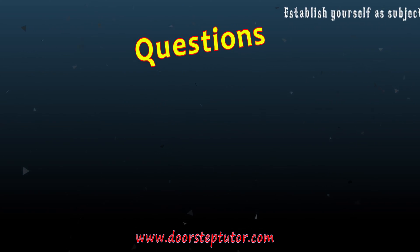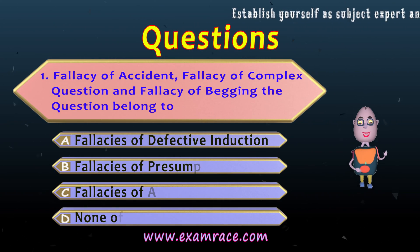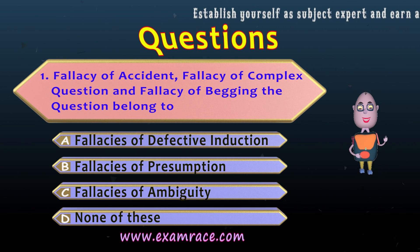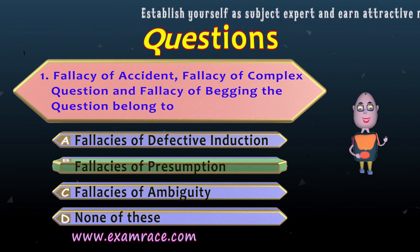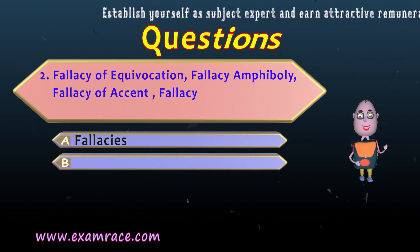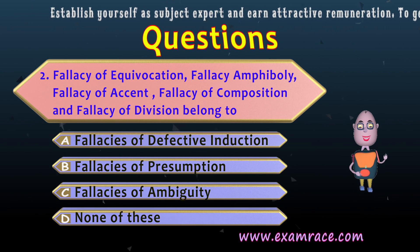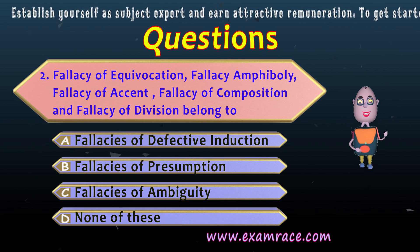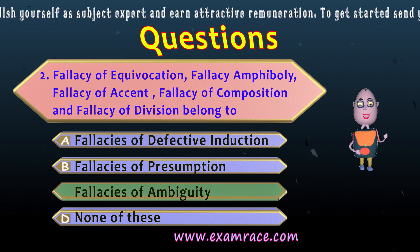Review Questions: 1. Fallacy of accident, fallacy of complex question, and fallacy of begging the question belong to — the correct answer is Fallacies of Presumption. 2. Fallacy of equivocation, amphibaly, accent, composition, and division belong to — the correct answer is Fallacies of Ambiguity. 3. 'Have you stopped shoplifting now?' is an example of — the correct answer is Fallacy of Complex Question.